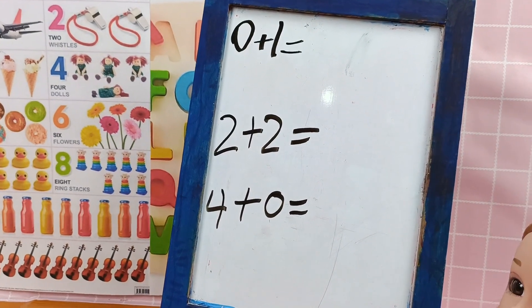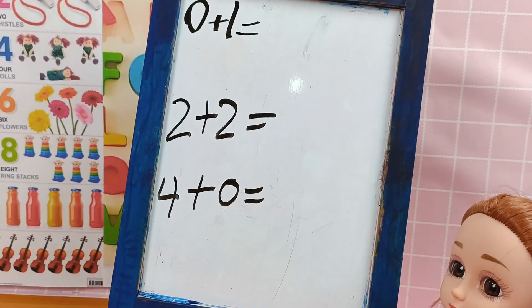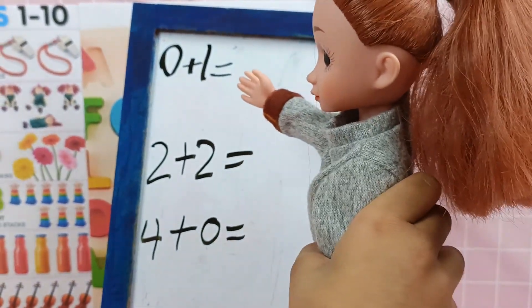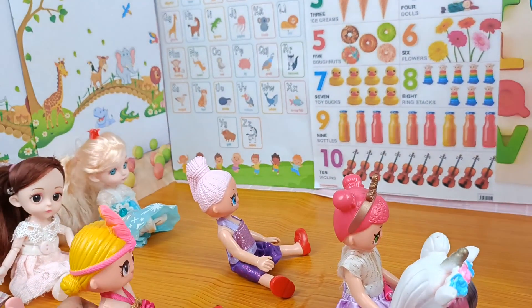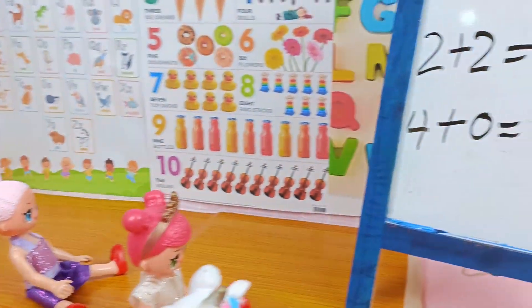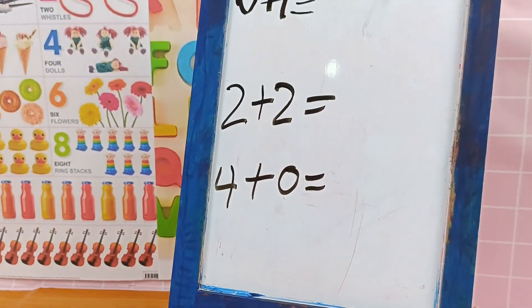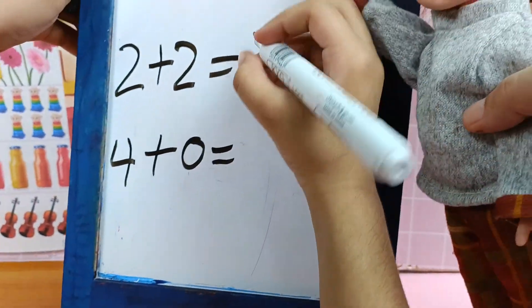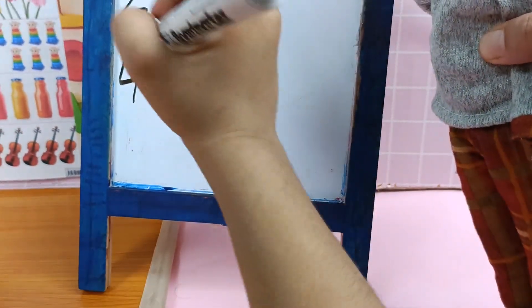So kids, I always wanted to tell you: 0 means nothing. What does 0 mean? Nothing. Now let me tell you the answers. 0 plus 1 — remember, 0 means nothing, so that means 1. 2 plus 2 is 4. And 4 plus 0 equals 4. See?